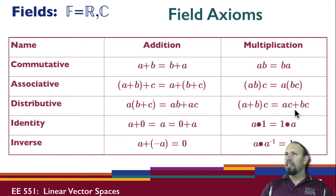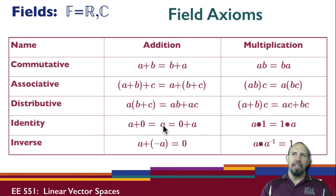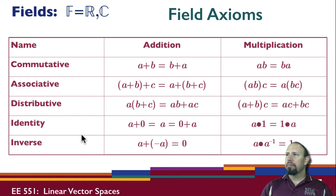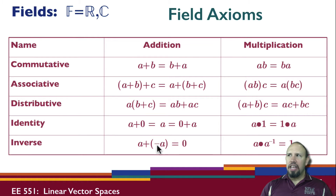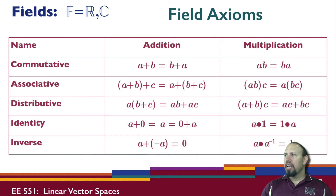You can distribute from the right or from the left. Identity: there's an additive identity — if you add the identity to an element, you get the element back. In this case, 0 is the additive identity. For multiplication, the identity is 1: when you multiply a times 1, you get the same thing back. The inverse: there's also an additive inverse, which means there's a negative — the negative value is in the set, and a plus negative a gives you 0. Multiplicative inverse: a times the inverse of a is equal to 1. You can go through and show that each of these satisfies all of these properties for a field.